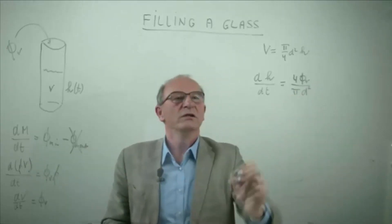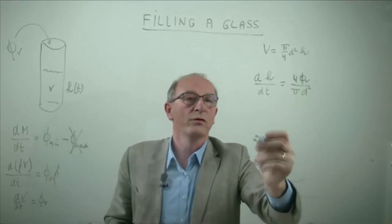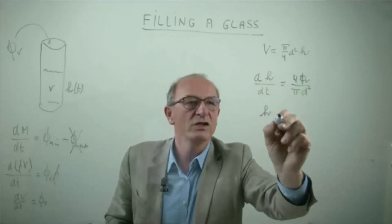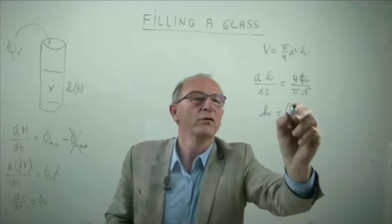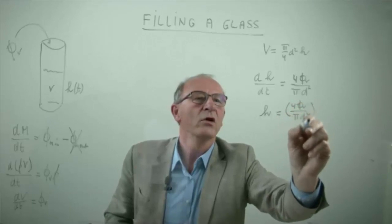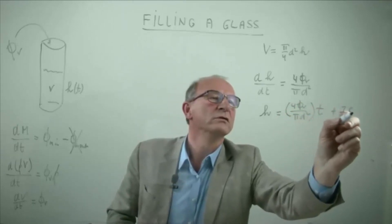You see, this is in fact a very simple differential equation which we have to solve. Let's integrate. h is equal to 4 phi over pi d squared multiplied by t plus an integration constant.